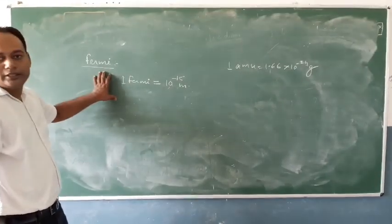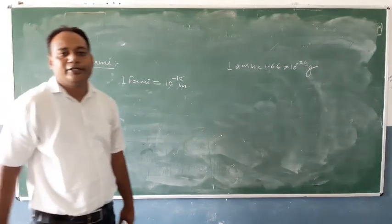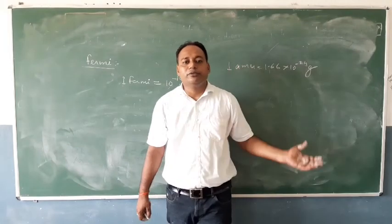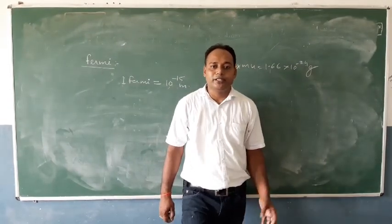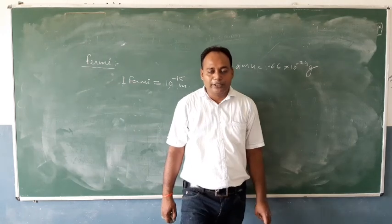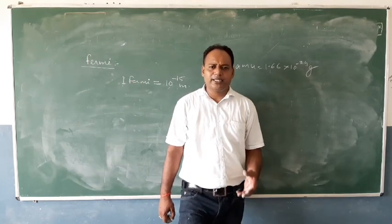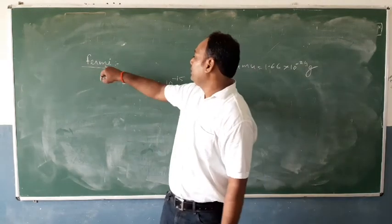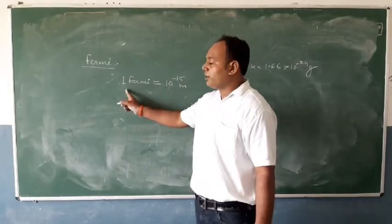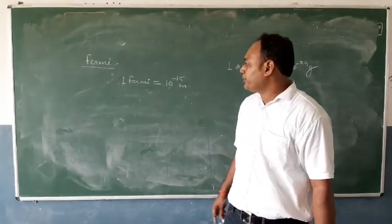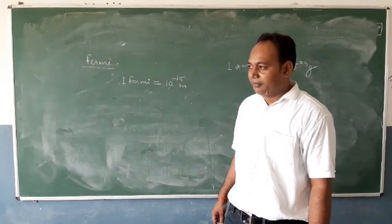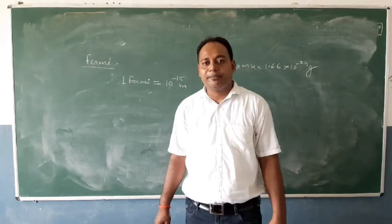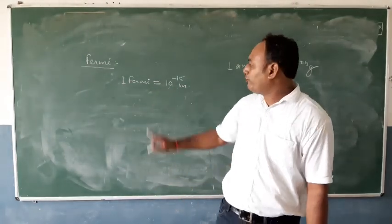Our next topic is the fermi. The fermi is also a measurement of length, but it is the smallest unit of length we will consider. One fermi is equal to 10⁻¹⁵ meters. You may not see fermi used in Class 11, but in Class 12, it appears when dealing with the structure of the atom.